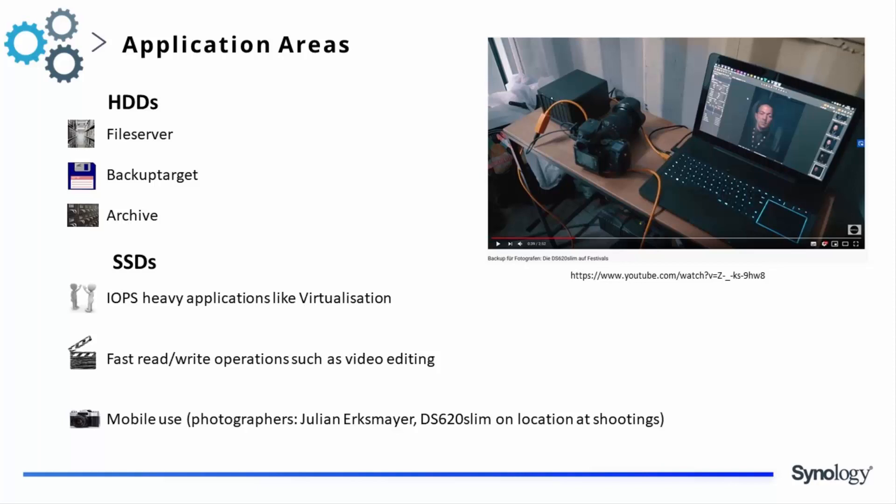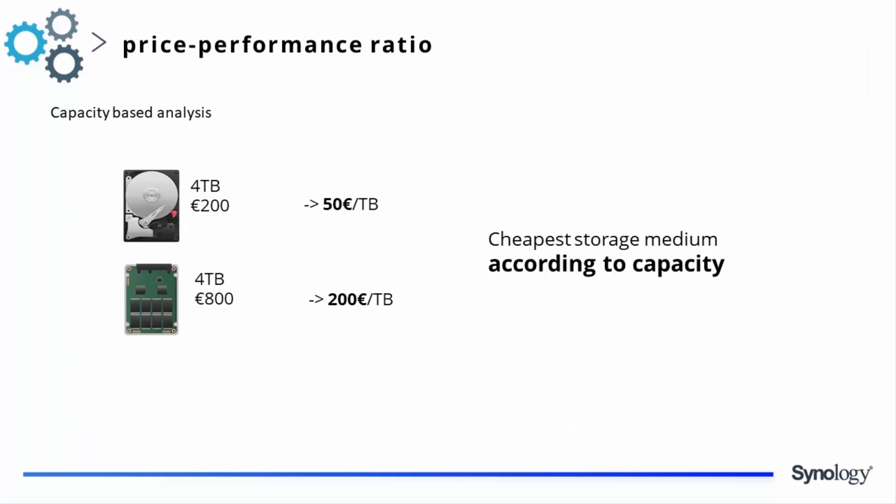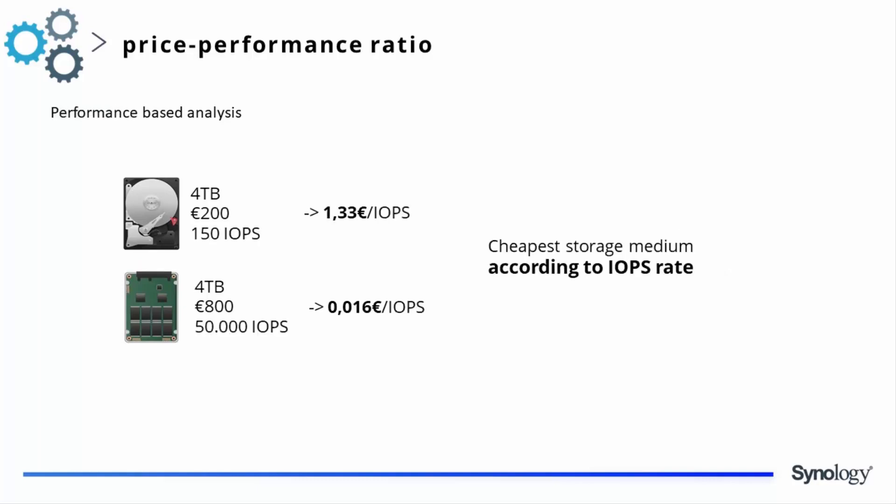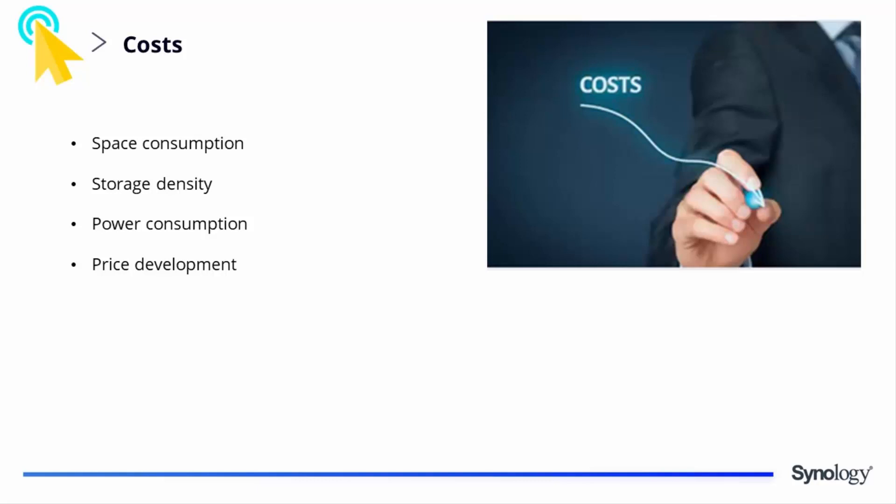From a business point of view it makes a lot of sense to invest more in your server, as it will pay back many times over through faster work and higher productivity. If we do a short cost-benefit analysis, disks are still much cheaper — on average a 4TB drive is 4 times cheaper than SSD. However, measured in performance, you spend 1.33 euros per IOPS per disk but only 0.016 euros per IOPS per SSD. Additional SSD advantages include lower physical space consumption due to higher storage density and lower energy consumption because less cooling is needed.